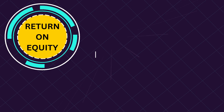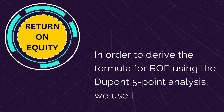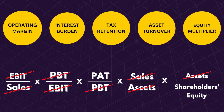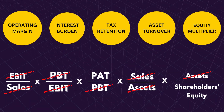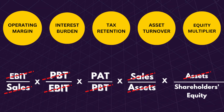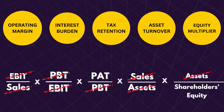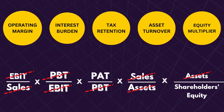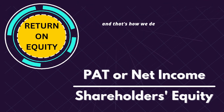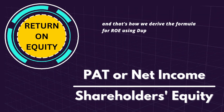In order to derive the formula for ROE using the DuPont 5-point analysis, we use this calculation: Operating Margin multiplied by Asset Turnover multiplied by Equity Multiplier multiplied by Interest Burden multiplied by Tax Retention. Once all other factors are cancelled out, we are left with PAT, or Net Income, divided by shareholders' equity.